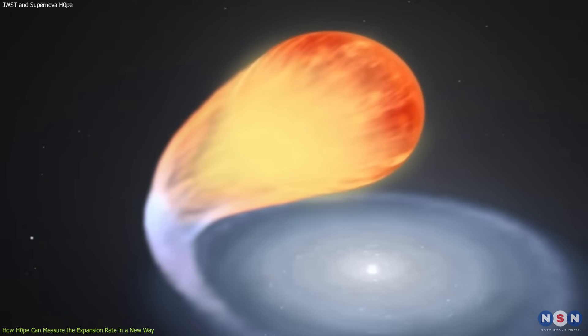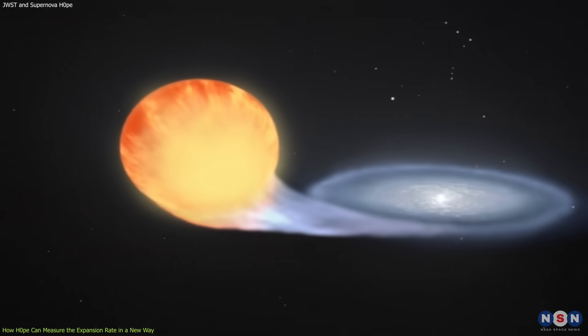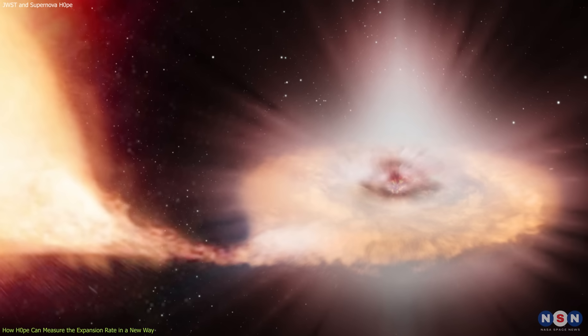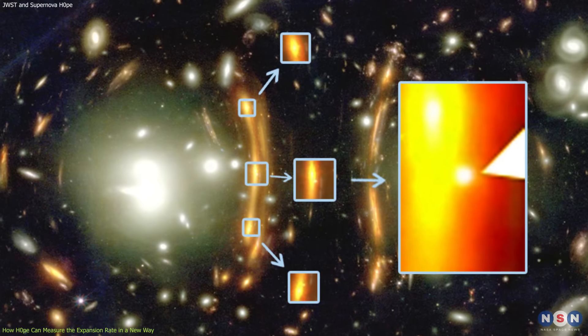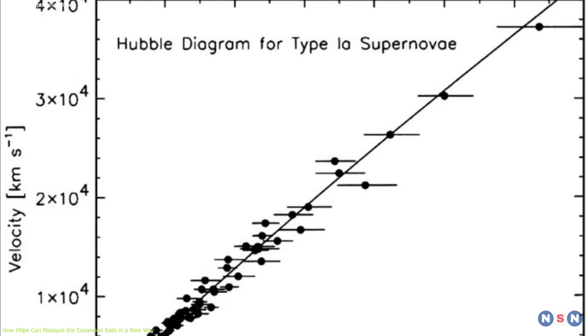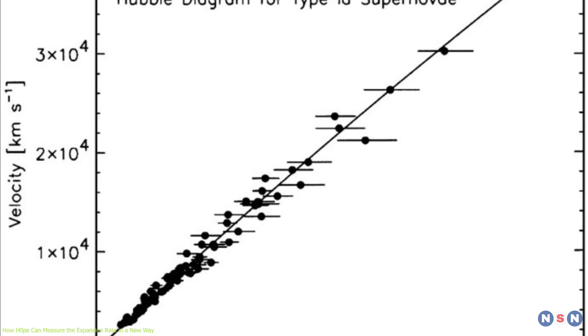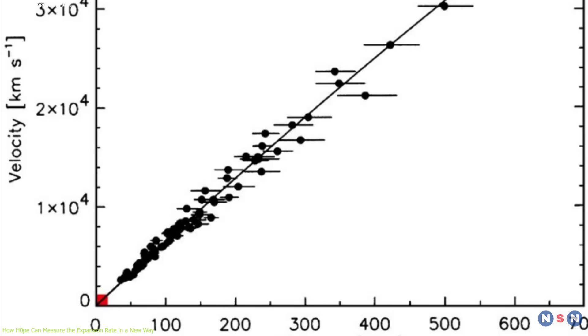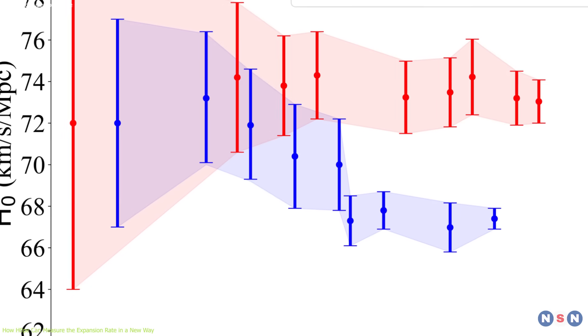One of the most commonly used standard candles are Type 1A supernovae, which have a very consistent luminosity that can be calibrated by observing them in nearby galaxies. This method gives a value of H0 of about 74 km per second per megaparsec, which is much higher than the CMB method.